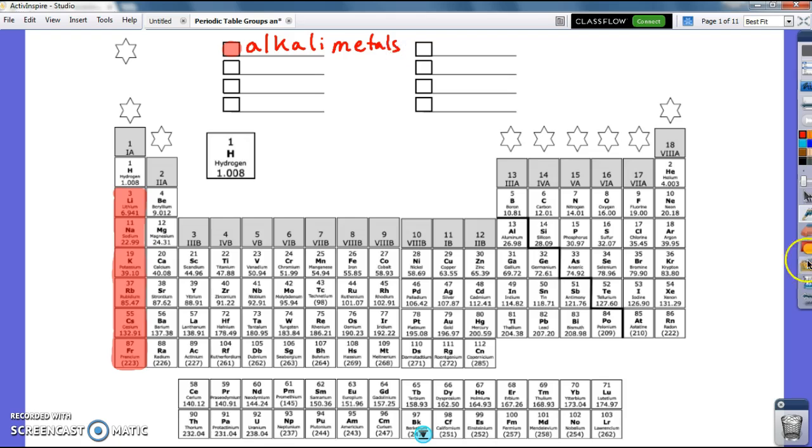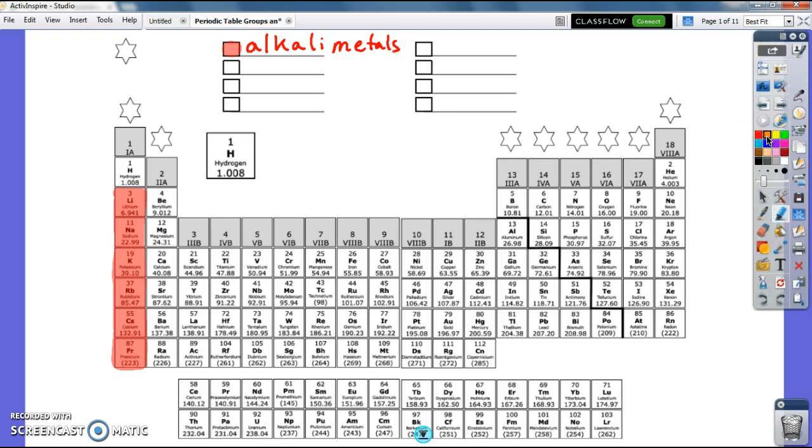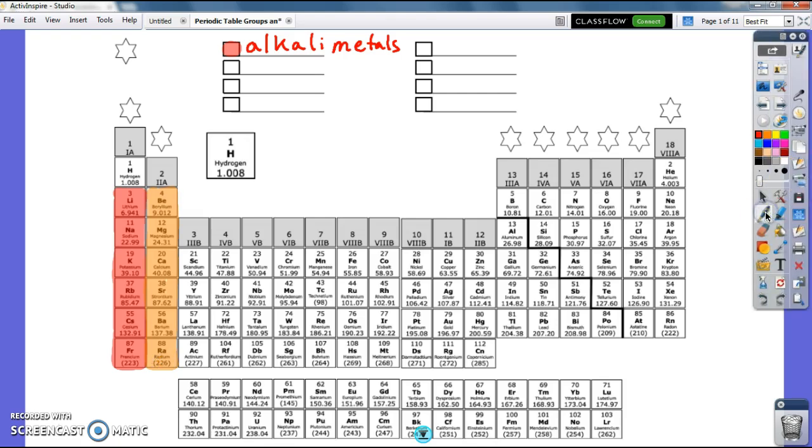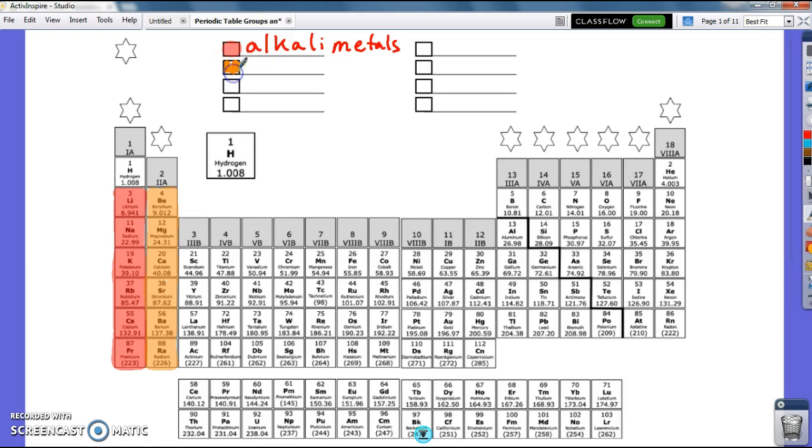Our second group, group two, are just a little bit different. They're the alkaline earth metals. If you've ever heard of an alkaline battery, that's where that name comes from. Alkaline batteries are made with things like magnesium, which is one of those elements. So we've got alkaline earth metals in this group.